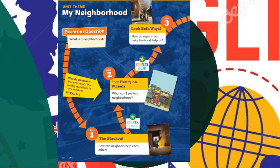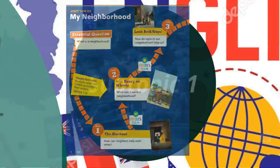In week two, we will read Henry on Wheels. The essential question is: what can I see in the neighborhood? In week three, it's an informational text, so we're going to learn about road signs and how we can be safe.